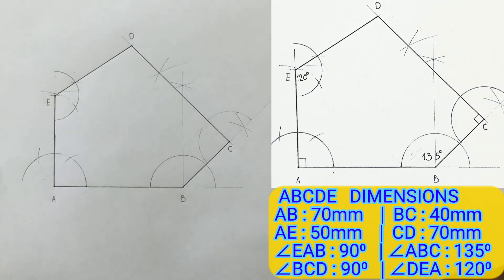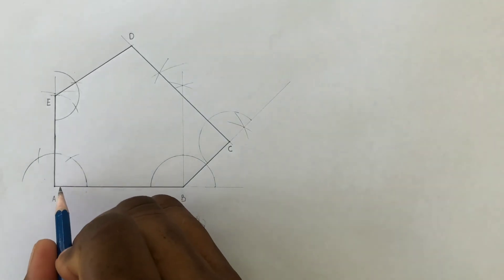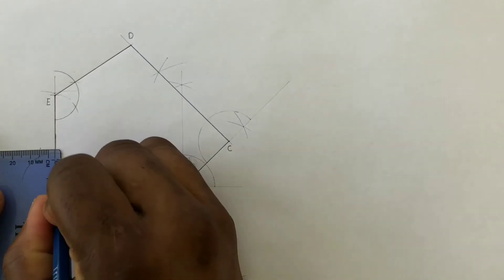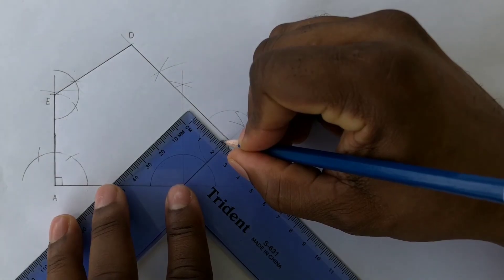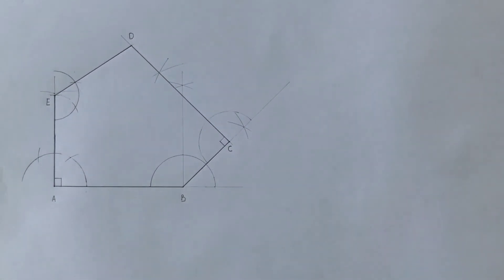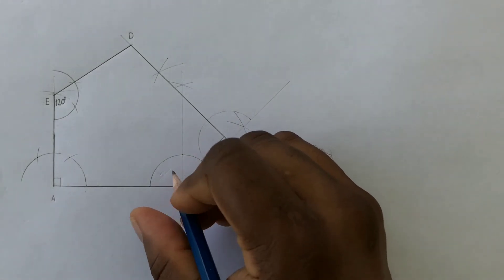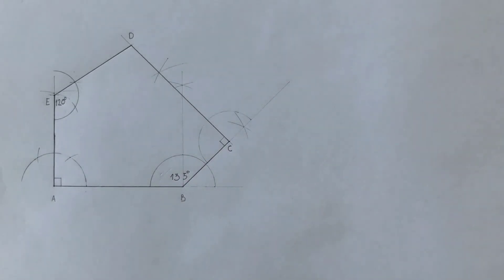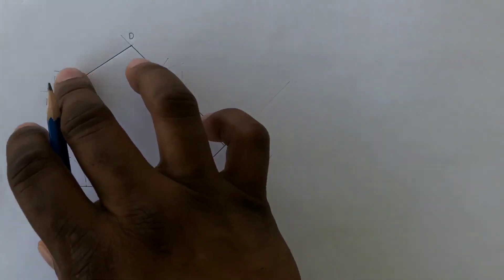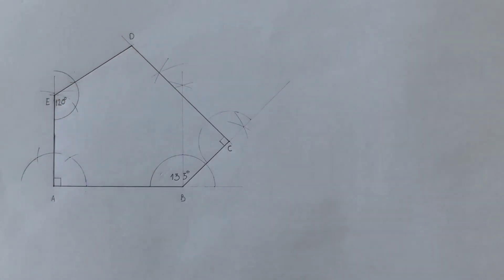Your irregular pentagon has angle EAB as a 90 degree angle, angle BCD also as a 90 degree angle, angle DEA as a 120 degree angle, and angle ABC as a 135 degree angle. An irregular polygon consists of unequal angles as shown here, and also unequal lengths. Now border your paper and complete your title block.